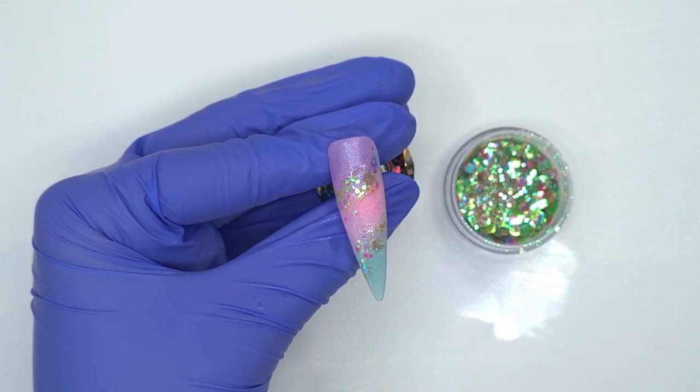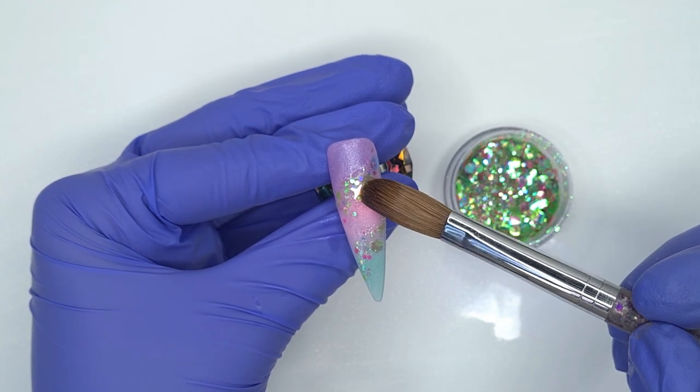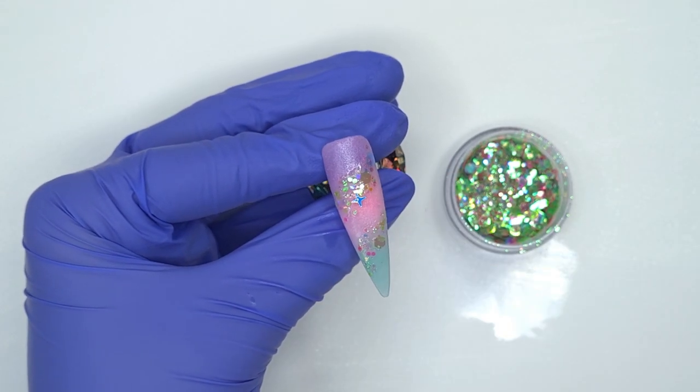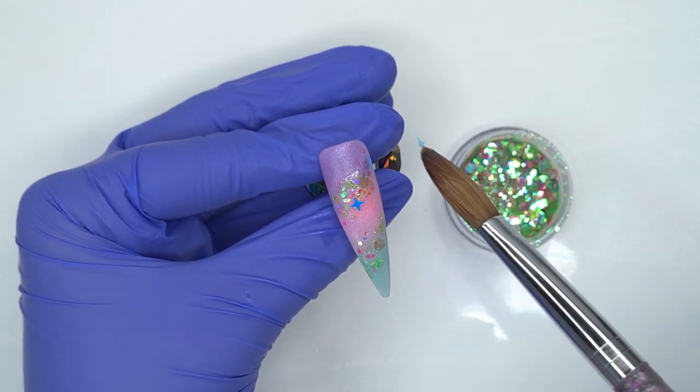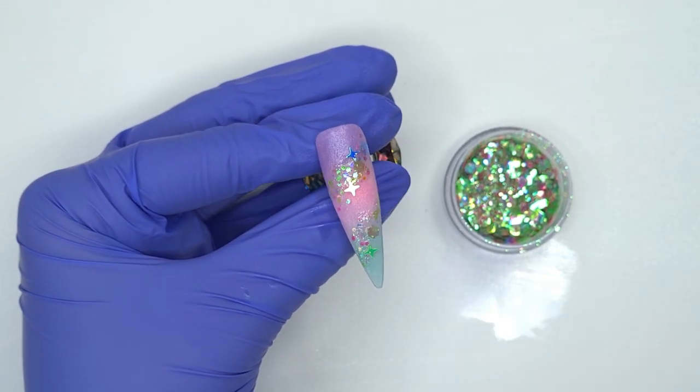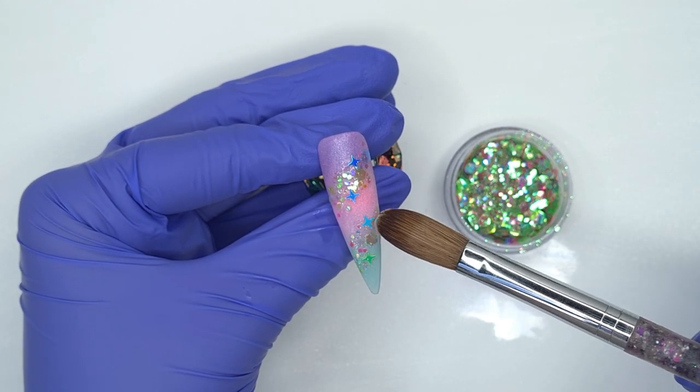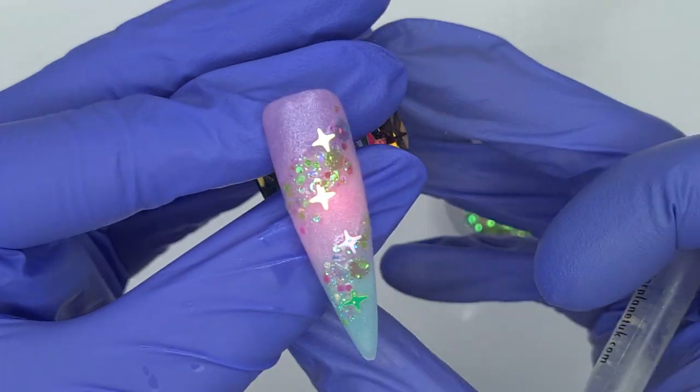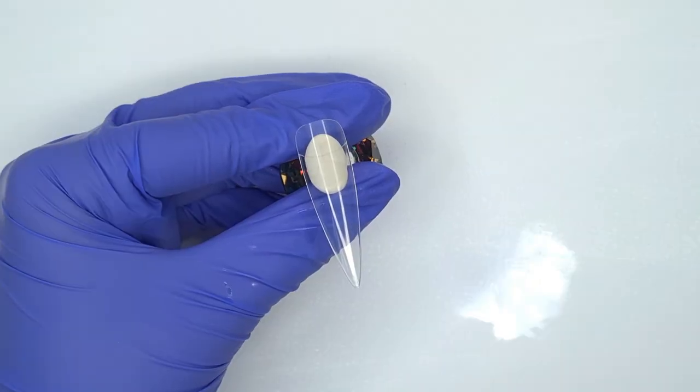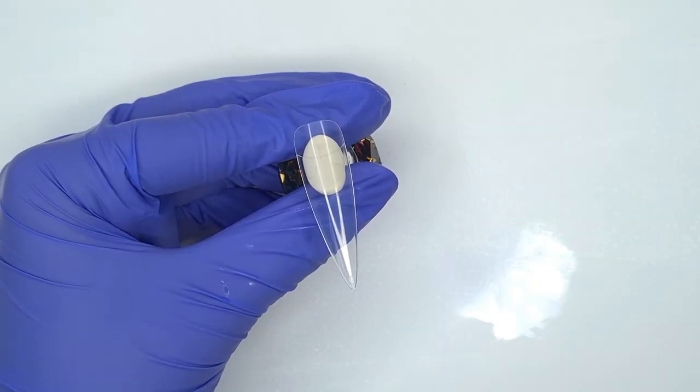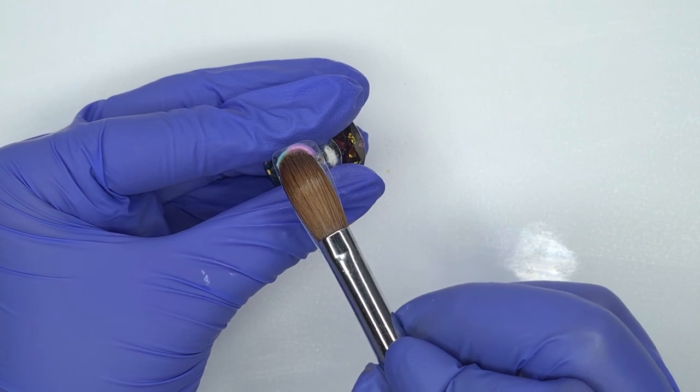Then on top of our glitter I wanted to tap on some of these iridescent AB stars. I've just tipped a couple of these out onto my paper towel because I find them a lot easier to pick up that way compared to picking them out of a pot. I'm just using my wet brush to pick these up. I'm not picking up any additional acrylic because that acrylic and glitter underneath is still tacky. I'm going to allow those glitters to set in place before encapsulating.